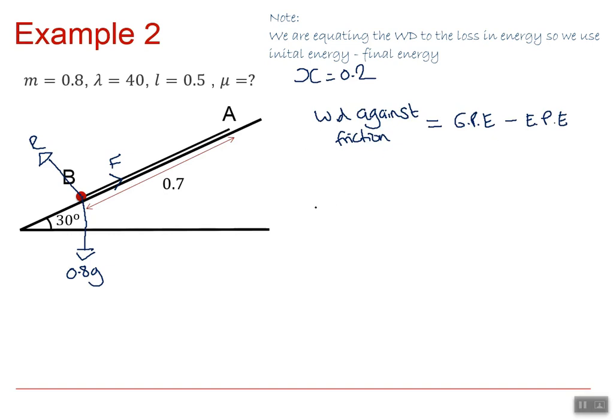So if we work out each of these, the work done against friction is mu R times the distance. So that is mu times 0.8G cos 30, which is R times by 0.7, which is the distance travelled. And that's going to be equal to, I'm going to write this on the next line. The gravitational potential energy that we have initially is 0.8G times 0.7 sin 30. That's the vertical component of this distance here. And that is, then we're going to subtract from that the elastic potential energy, which is lambda x squared over 2L. So we've got 40 times 0.2 squared all over 2 times 0.5.